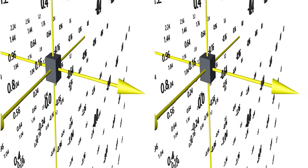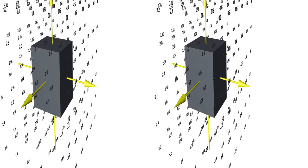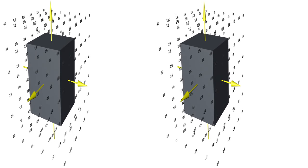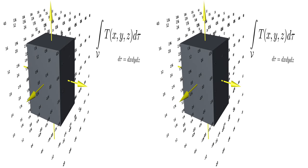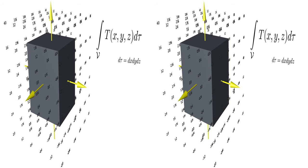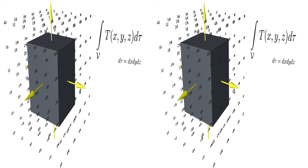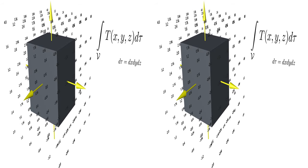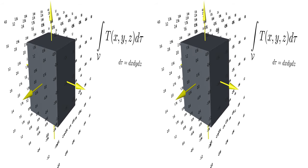Given any scalar function, you can integrate this over some volume. In Cartesian coordinates, the volume element is an infinitesimally small cube of size dx, dy, dz.